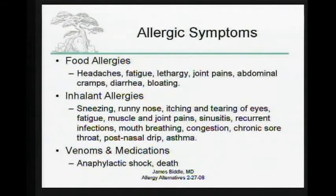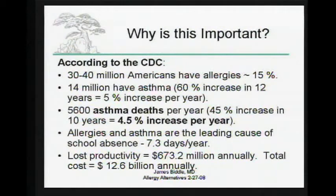With venoms, many people get anaphylactic shock and even death. With medications, most people just get a rash-type response. According to the Centers for Disease Control, 30 to 40 million Americans have allergies — about 15 percent of the general population. 14 million have asthma, so about half of people with allergies also have asthma. The biggest component of asthma is allergies, so if you can treat the allergies, for the most part you can treat the asthma.